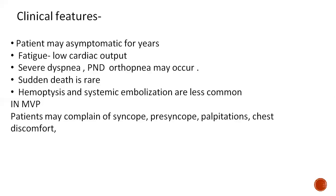In mitral valve prolapse syndrome, patients may complain of syncope, presyncope, palpitations, and chest discomfort. Chest discomfort in MVP is generally associated with tensing of the papillary muscle and may mimic angina. However, the chest discomfort in MVP is generally not associated with exertion. Palpitations in MVP generally occur due to arrhythmias, and MVP may be associated with ventricular tachycardia or symptomatic bradyarrhythmias in some patients.